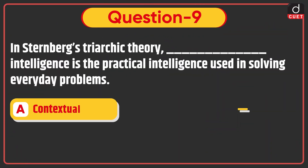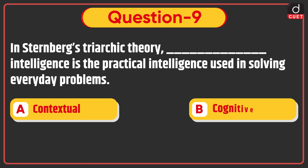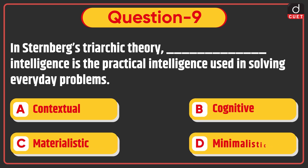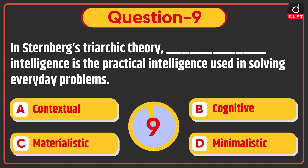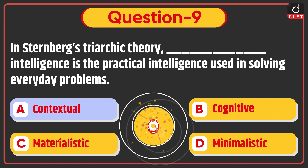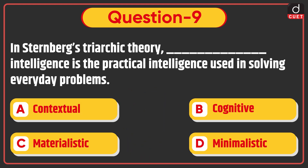Next question: In Sternberg's Triarchic Theory, the intelligence that is the practical intelligence used in solving everyday problems is called — Contextual, Cognitive, Materialistic, or Minimalistic. The correct answer is option A, Contextual.